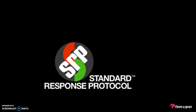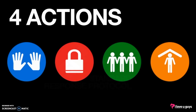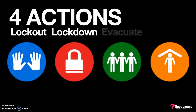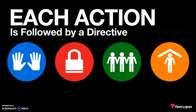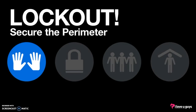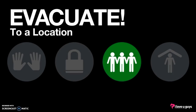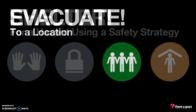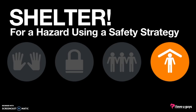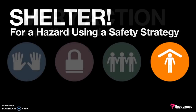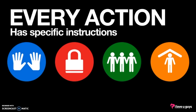It's called the Standard Response Protocol, and it's based on four actions taken during a critical incident: Lockout, Lockdown, Evacuate, and Shelter. Each action is followed by a directive. Lockout: secure the perimeter. Lockdown: locks, lights, out of sight. Evacuate to the announced location. Shelter for a hazard using a safety strategy. Every action then has specific instructions of what to do in a crisis.